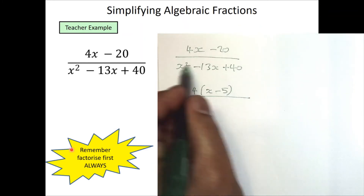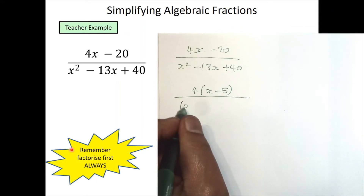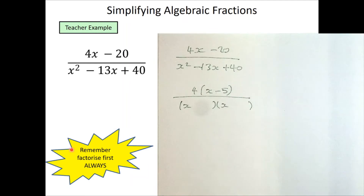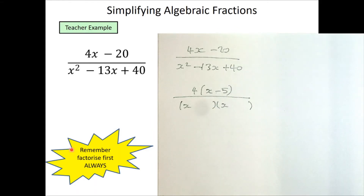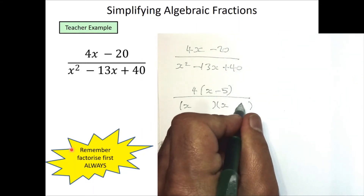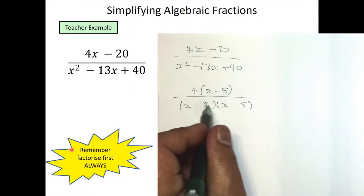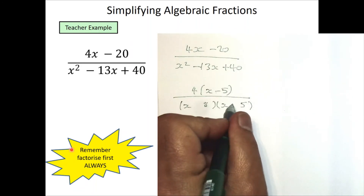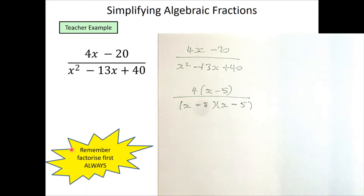For the denominator, x² − 13x + 40 is a quadratic, so we use double brackets. We need two numbers that multiply to give 40 and add to give −13. Using 5 and 8: 5 + 8 = 13, so we need both negative to get −13, giving (x − 5)(x − 8). Now we can cancel any common terms or common brackets.